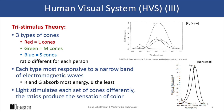Now let's discuss the three-stimulus theory. As mentioned, there are three types of cones, each sensitive to a different wavelength of light: L cones for red, M cones for green, and S cones for blue. The ratio of these cones varies from person to person, which can influence how we perceive color. These cones are most responsive to narrow bands of electromagnetic waves, with red and green absorbing the most energy and blue cones being less sensitive.